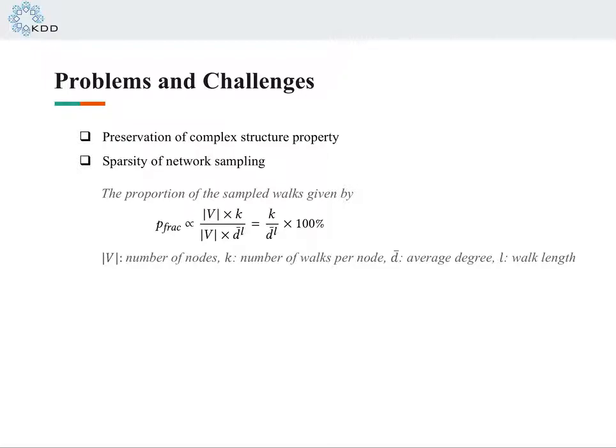For this embedding problem, there are two major challenges: the preservation of complex structure property and the sparsity of network sampling.